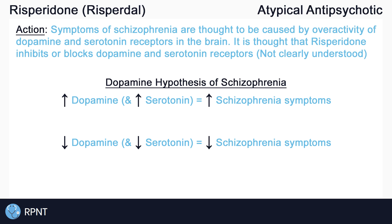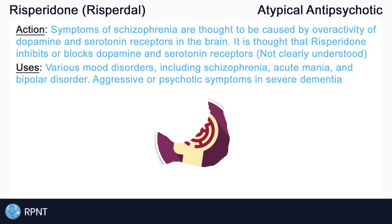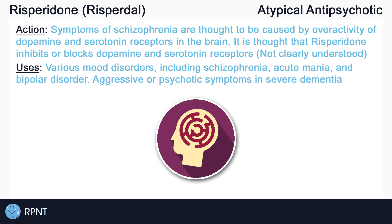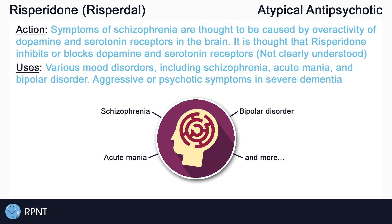Risperidone is used in the management of various mood disorders, including schizophrenia, acute mania, autism, and bipolar disorder. As an atypical antipsychotic, Risperidone can treat both positive and negative symptoms of schizophrenia. It can also be used in the short-term management of aggressive or psychotic symptoms in severe dementia.